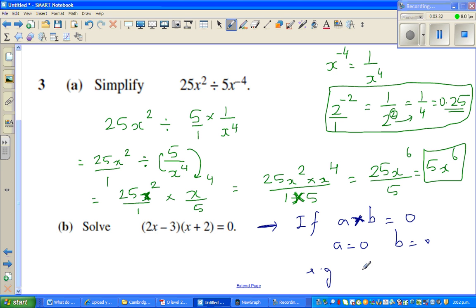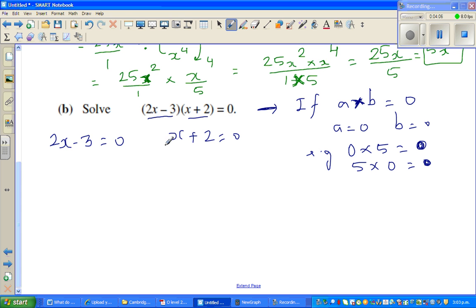We can say a is 0 or b is 0. To give you an example, 0 times 5 is 0 and 5 times 0 is also 0. That means if you multiply two numbers and if one of them is 0, the product is always 0. So this is one number and this is also a number. So I can say, well, this is 0. 2x minus 3 is 0, and x plus 2 is also 0. You can say and or or. So this is 0 or this is 0.